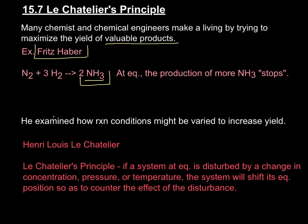We know that at equilibrium, the production of more NH3 somewhat stops — in quotes, because it doesn't really stop. It's in equilibrium, so reactants are being turned into products and some products are being turned into reactants, so you're not really increasing the concentration of NH3. Fritz Haber wanted to change that. He wanted more NH3, and he wanted to figure out how to manipulate this reaction to create more of his valuable product. Many chemists and chemical engineers have adopted this practice — it's how industrial chemistry works nowadays. People make really good money by learning to manipulate chemical reactions.